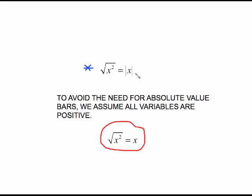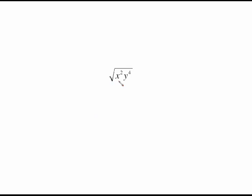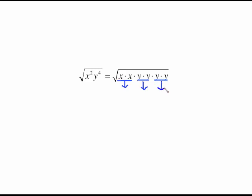We won't have to worry about the absolute value bars. You might have seen that in algebra 1 or algebra 2, but the very next section always says we'll avoid those bars by assuming the variables are positive. So we're going to assume the variables are positive and use that simpler definition. We take this variable by variable: the square root of x squared and then y to the fourth. Write it all out — there's a pair of x's, a pair of y's, and another pair of y's. So we get an x out and two y's out.